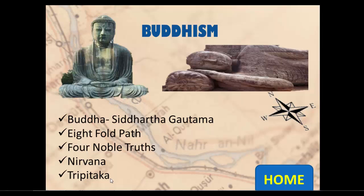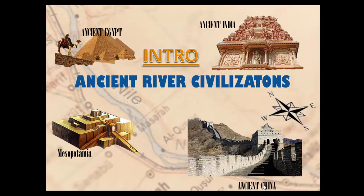The Tripitaka — meaning 'three baskets' or three canons — is the scripture of Buddhism. It traditionally contains three baskets of teaching. The Buddhist scriptures were written on palm leaves and describe how to reach Nirvana and follow the eightfold path. The Tripitaka is essentially the written guide to being a Buddhist. Thanks for listening to the India overview — next we move on to China.